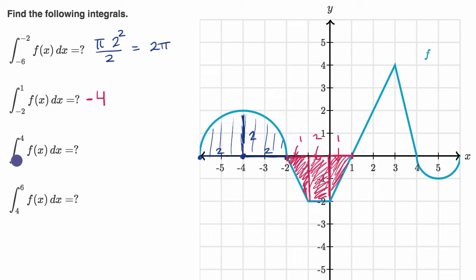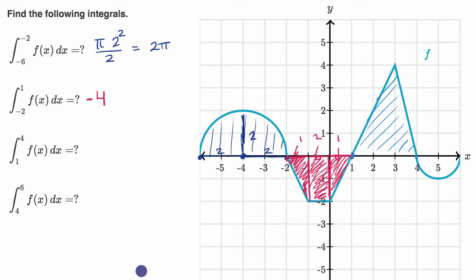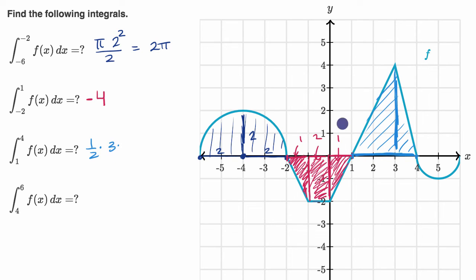Now we're going from one to four of f of x dx — so it's this area right over there. We use the formula for the area of a triangle: one half times base times height. The base goes from one to four, so it has a length of three. The height is four. So it's one half times three times four, which gives us six.